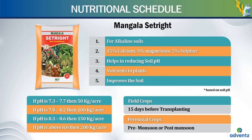Each bag of Mangala Setrite is 50 kgs. To recap: Mangala Setrite is for alkaline soils, with a nutritional composition of calcium, magnesium and sulfur. It helps in reducing soil pH, gives nutrients to the plants and improves the soil. The dosage of Mangala Setrite depends on the pH of the soil and the time of application depends on whether it is a field crop or a perennial crop.